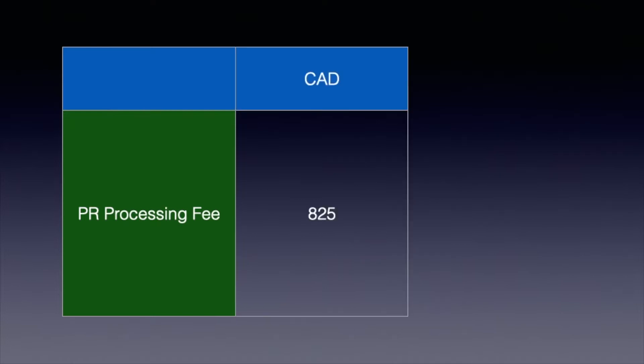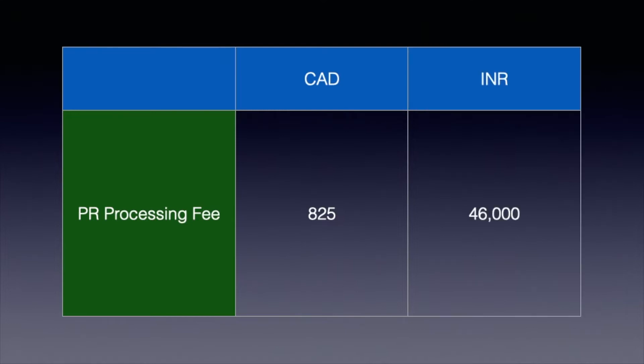The first thing you need to pay for your PR application is the PR processing fee. Once you submit your form, you will need to pay the PR processing fee, which will cost around 825 Canadian dollars — approximately 46,000 INR. This fee is for one individual; if you are the primary applicant applying for yourself, you will have to pay 825 Canadian dollars.